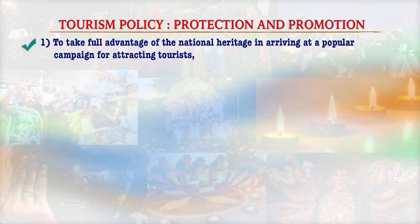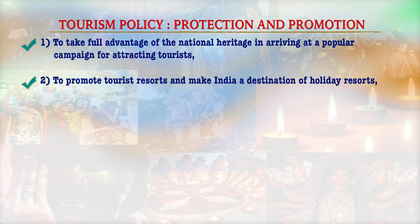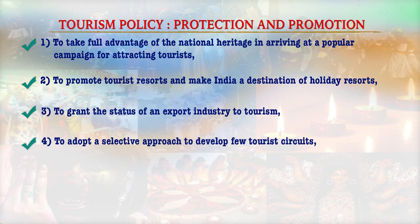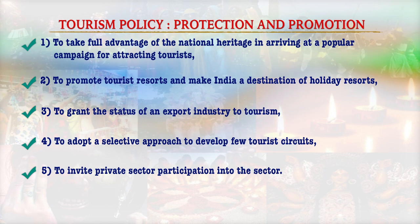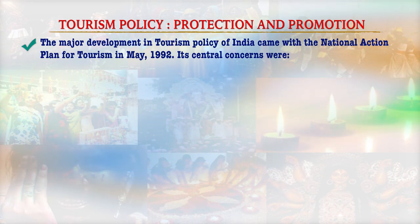The 1982 tourism policy aimed to take full advantage of national heritage to attract tourists, to promote tourist resorts and make India a holiday destination, to grant the status of an export industry to tourism, to adopt a selective approach to develop tourist circuits, and to invite private sector participation. The planning commission recognized tourism as an industry by June 1992. Tourism policy considered India's cultural heritage as a commodity to attract foreign travelers. The major development in tourism policy came with the National Action Plan for Tourism in 1992.